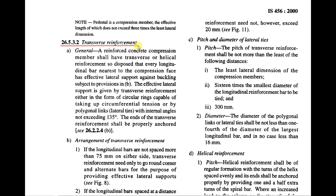Transverse reinforcement is given in Clause 26.5.3.2. Every longitudinal bar nearest to the compression face shall have effective lateral support against buckling. The effective lateral support is provided by transverse reinforcement either in the form of circular rings capable of taking up circumferential tension, or by polygonal links (lateral ties) with internal angles not exceeding 135 degrees. The ends shall be properly anchored — refer to Clause 26.2.2.4.